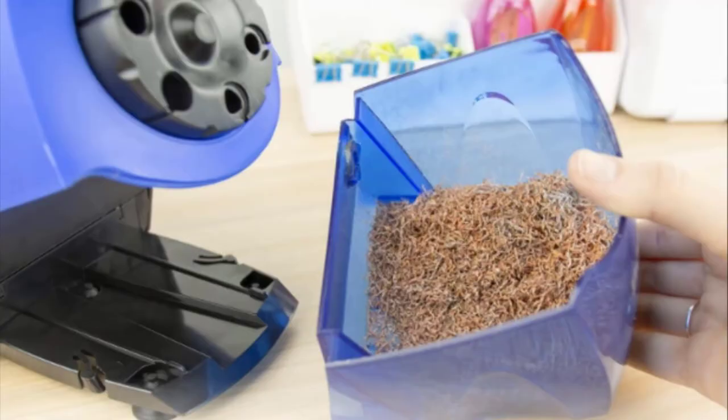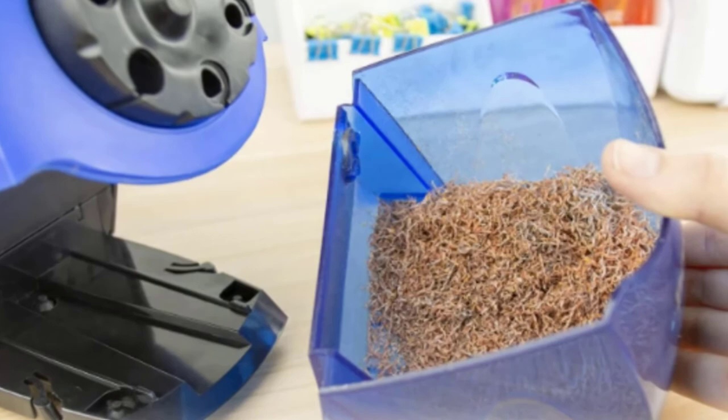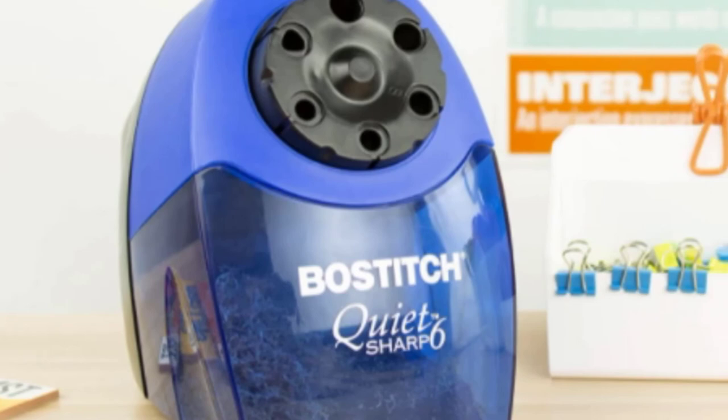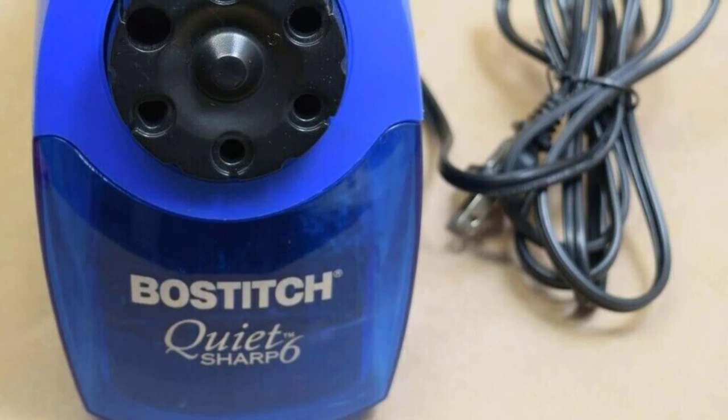Suction cup feed keeps the QuietSharp 6 firmly secured to your table or desk, ready to get to work when you are. Emptying the shavings is easy. The drawer is translucent enough to see when it's time to clean it out and the Bostage MagnaSafe technology keeps the motor from running while the blades are exposed. Once the drawer is returned, the sharpener is active again.